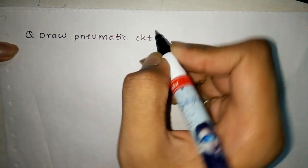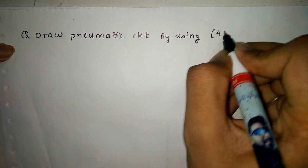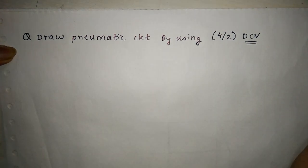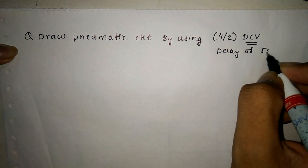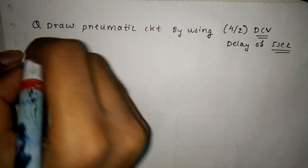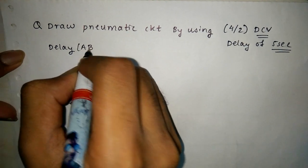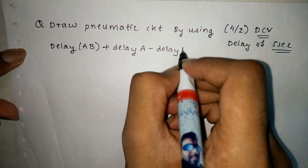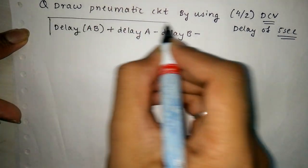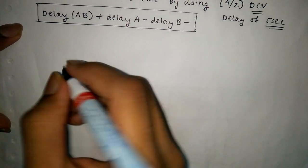Hello guys, this is Shortcut to Pass MU and we are putting a video on drawing the pneumatic circuit. The question is: draw the pneumatic circuit using a 4/2 DC control valve. The sequence is: delay A B+, delay A-, delay B-.